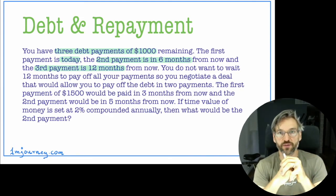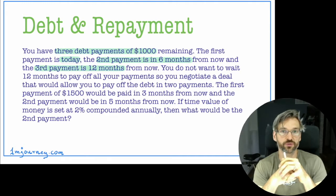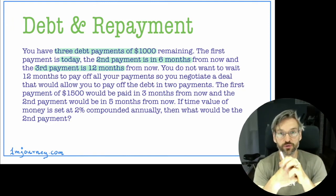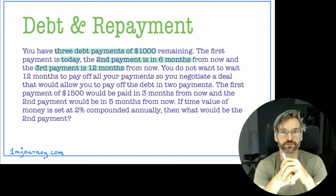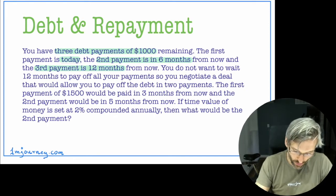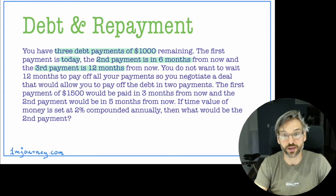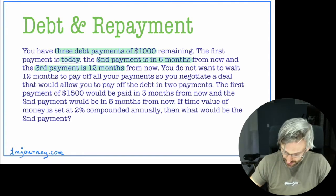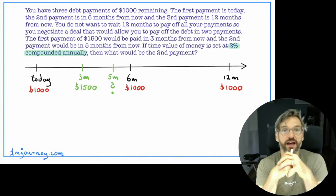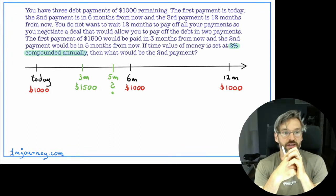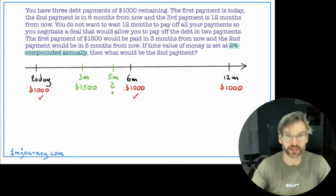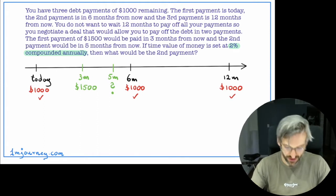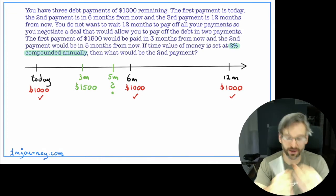If you've watched the equivalent values videos, you will know that you have to basically bring all the values to one particular date, which we call the focal date, in order to compare values and see if they're going to be equivalent. I have drawn a timeline. The payments are in red — $1,000 due today, $1,000 in six months, and $1,000 in 12 months. That's if we normally would pay off this particular debt.